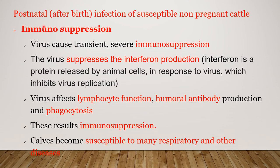Continuing the first situation — postnatal infection of susceptible non-pregnant cattle. We have seen acute infection; now we go to the second part of this situation: immunosuppression, or suppression of immunity. The virus causes temporary severe immunosuppression. The virus suppresses interferon production. Interferon is a protein released by animal cells in response to virus, which inhibits virus replication. This virus suppresses interferon, causing immunosuppression.